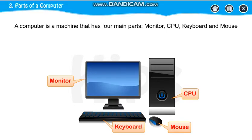Every computer has these 4 parts. Like in laptops, the CPU is below the keyboard — it is not in a box, it is below your keyboard. And then there is a monitor and a keyboard. Instead of a mouse, in laptops a touchpad is there.